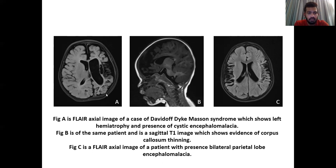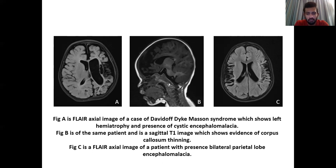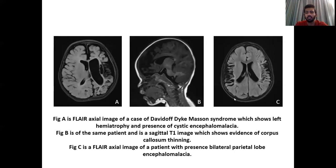Figure A is a FLAIR axial image of a case of Davidoff-Dyke-Masson syndrome, which shows left hemiatrophy and presence of cystic encephalomalacia. Figure B is a sagittal T1 image of the same patient showing evidence of corpus callosal thinning. Figure C is a FLAIR axial image of the same patient showing bilateral parietal lobe encephalomalacia.